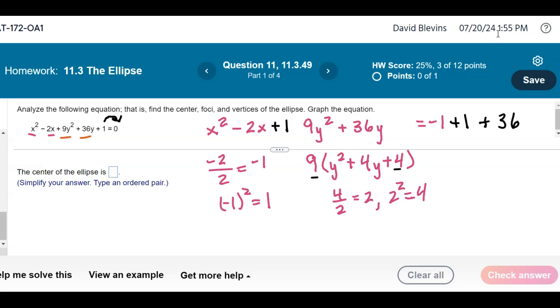So the completed square form is going to be x minus 1 squared, and then I have a plus 9, and then in the parentheses I squared half of 4, that was 2, so I get y plus 2 squared, and that's equal to positive 36 on the right hand side. That's what I'm going to divide by to get a 1 over here.